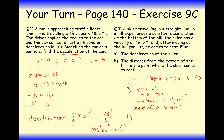Part B: the distance from the bottom of the hill to the point where the skier comes to rest. Using S equals (U + V) divided by 2 times T: that's 16 plus 0 over 2, times 40. So it's 8 times 40, which is 320. So 320 metres — that's pretty far given the skier is travelling up the hill!